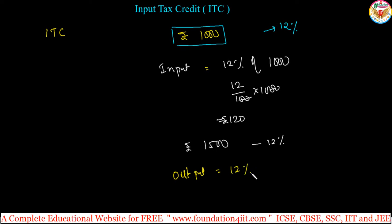Output is same 12% of 1500. That is 12 into 15 because 100 cancels. 15 into 12 is 180.